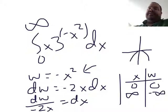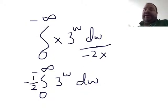Alright, so let's make these changes. So now we have x times 3 to the w, dw, over negative 2x. I can cancel the x's, and I've changed my limits as well. And so now let's simplify. I can bring the minus 1 half out front. And now it's the integral from 0 to minus infinity, 3 to the w, dw.